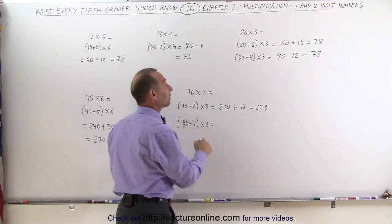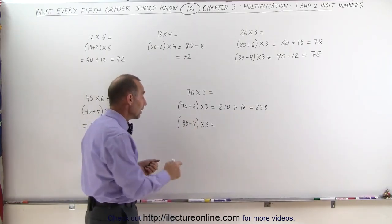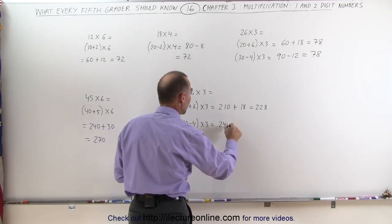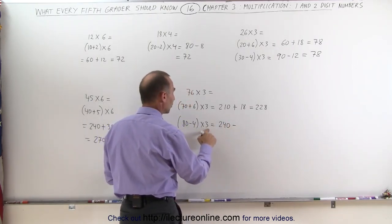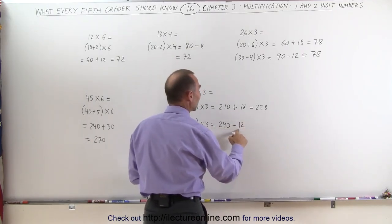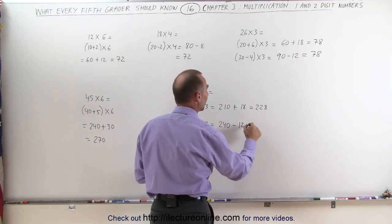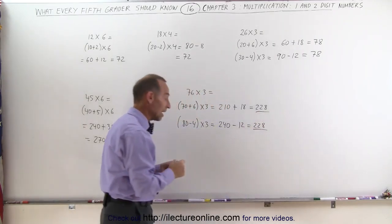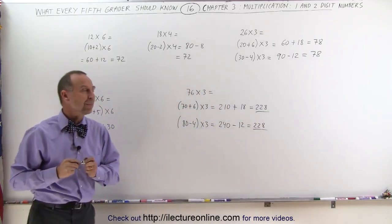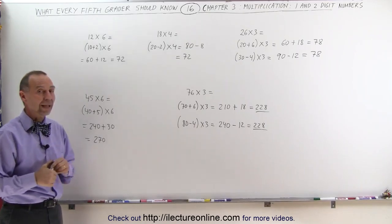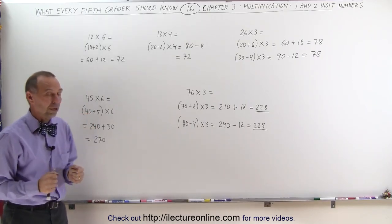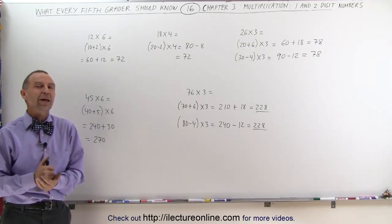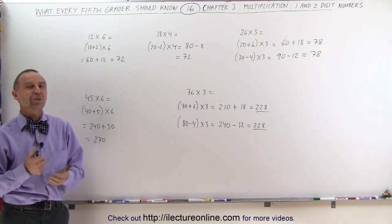If you write it as 80 minus 4 times 3, 80 times 3 is 8 times 3 equals 24, add a 0, that's 240. Minus 4 times 3 is 12. 240 minus 10 is 230. 230 minus 2 is 228. Same answer. Notice how easy it can be to multiply a two-digit number times a one-digit number if you use one of these tricks. That's how it makes the work a lot easier when we multiply single-digit numbers with two-digit numbers.